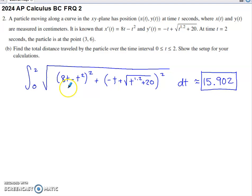Part B asks us to find the total distance traveled by the particle on the interval 0 to 2. Show the setup for your calculation. So this is basically finding the curve length of x(t), y(t) on the interval 0 to 2.